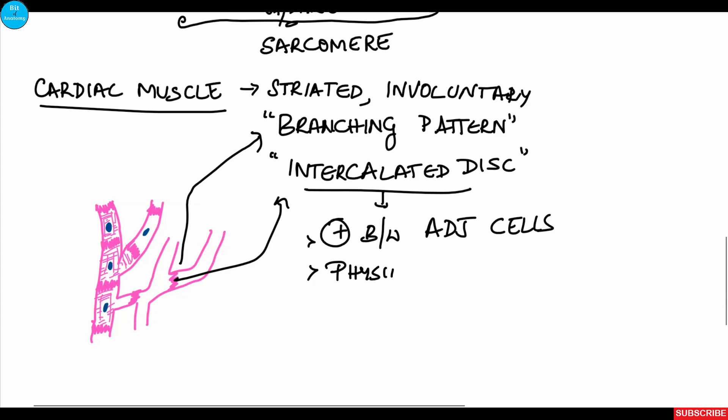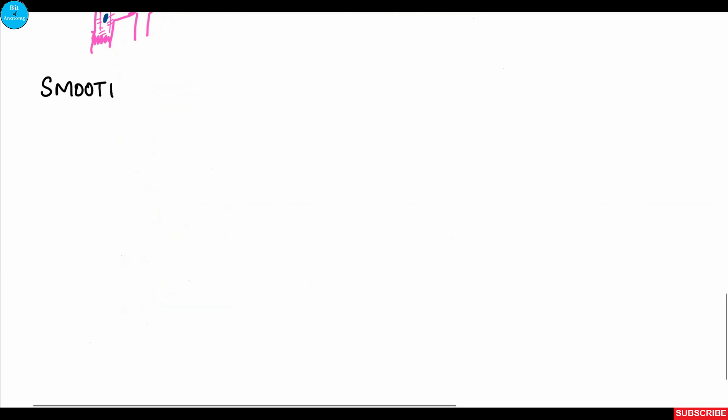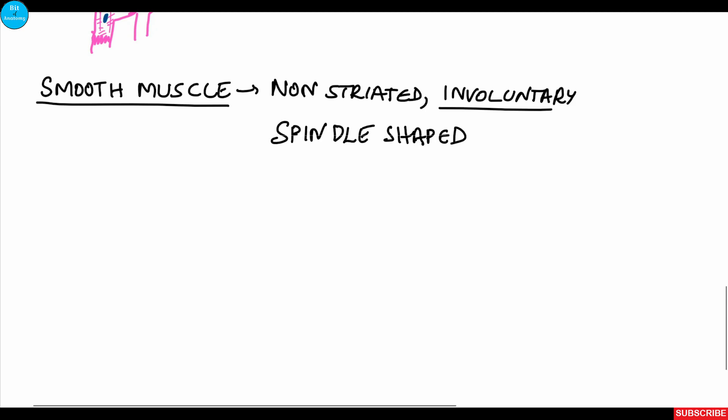Coming to the last muscle—smooth muscle: this is an example of non-striated muscle. It is involuntary with few exceptions. Each smooth muscle cell is spindle-shaped, contains a single nucleus situated in the center, and there are no striations.